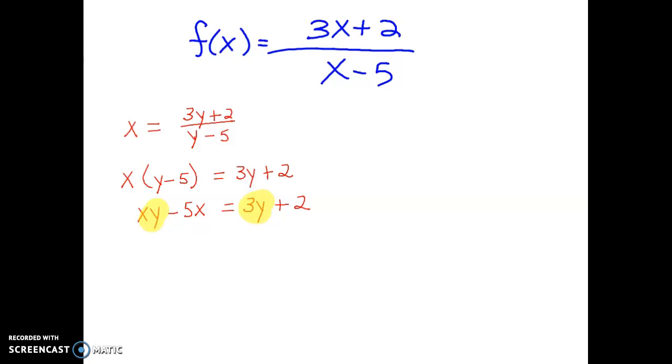My goal is to solve for the letter y. That means I want to get y on one side of the equation, and anything without y on the other side of the equation. I can do that by subtracting 3y to move it to the left side. I can add 5x to move it to the right side.